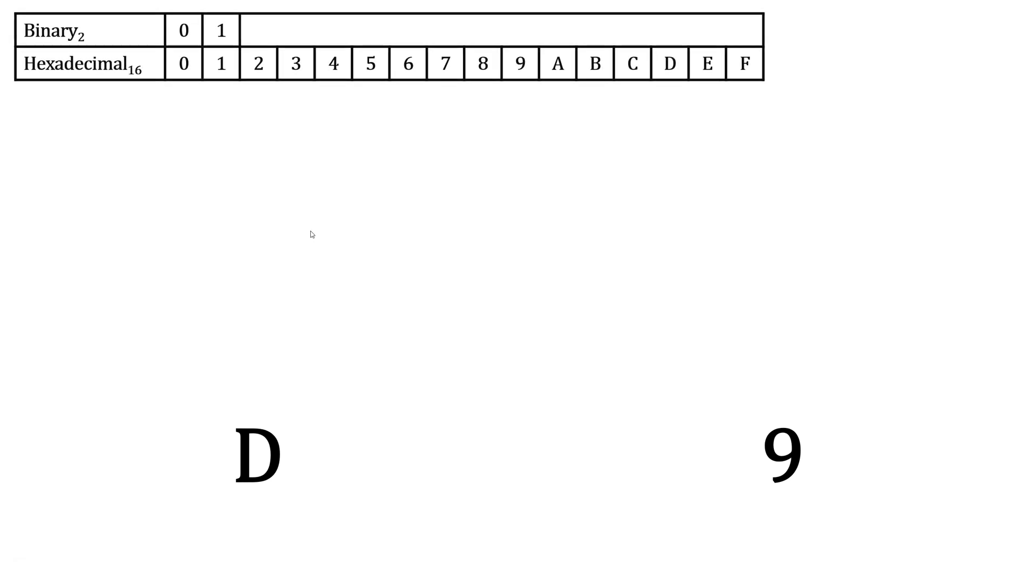Hexadecimal digits have 16 possibilities, ranging from 0 to F. Binary digits only have two possibilities: 0 and 1. This means for each hexadecimal digit we're going to need up to four binary digits.